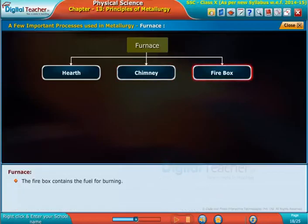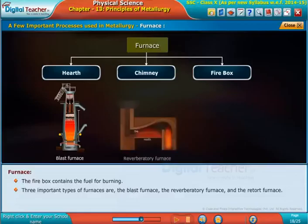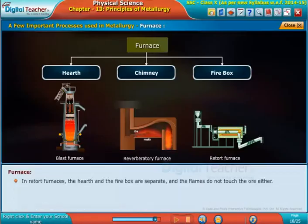The firebox contains the fuel for burning. Three important types of furnaces are the blast furnace, the reverberatory furnace, and the retort furnace. The blast furnace has a combined hearth and firebox. They are separated in reverberatory furnace, but the flames do reach the ore for the purpose of heating. In retort furnaces, the hearth and the firebox are separate and the flames do not touch the ore.